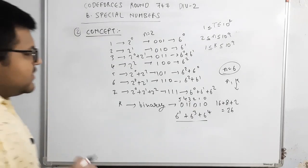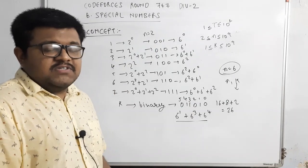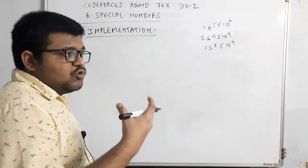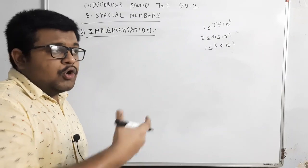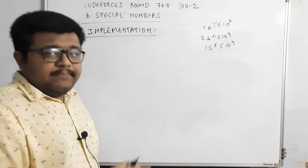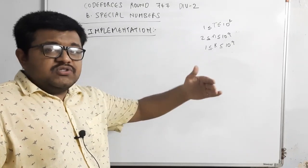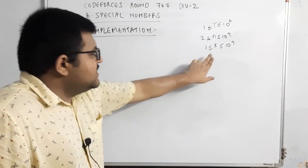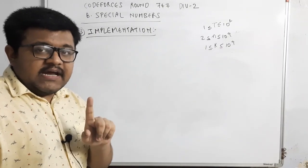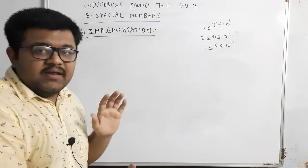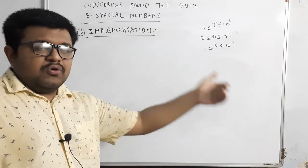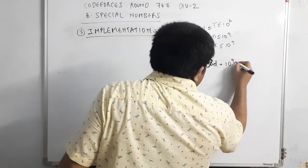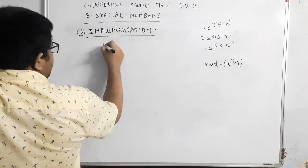Now let's see how to implement this. We iterate through the binary representation of k from right to left. We maintain a variable j representing the current power of n (starting at n^0), and answer initialized to 0. The modulo value is 10^9 + 7.